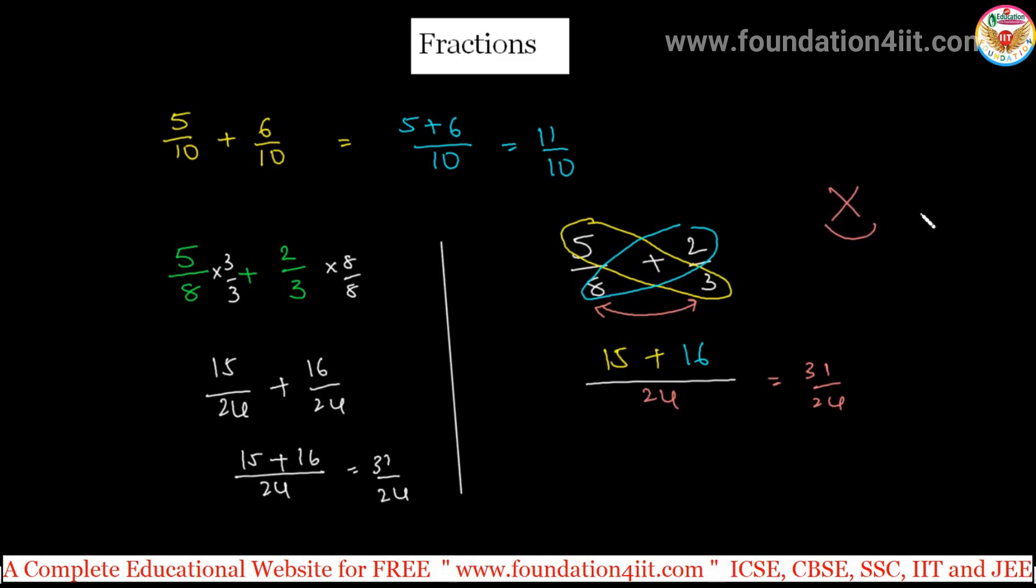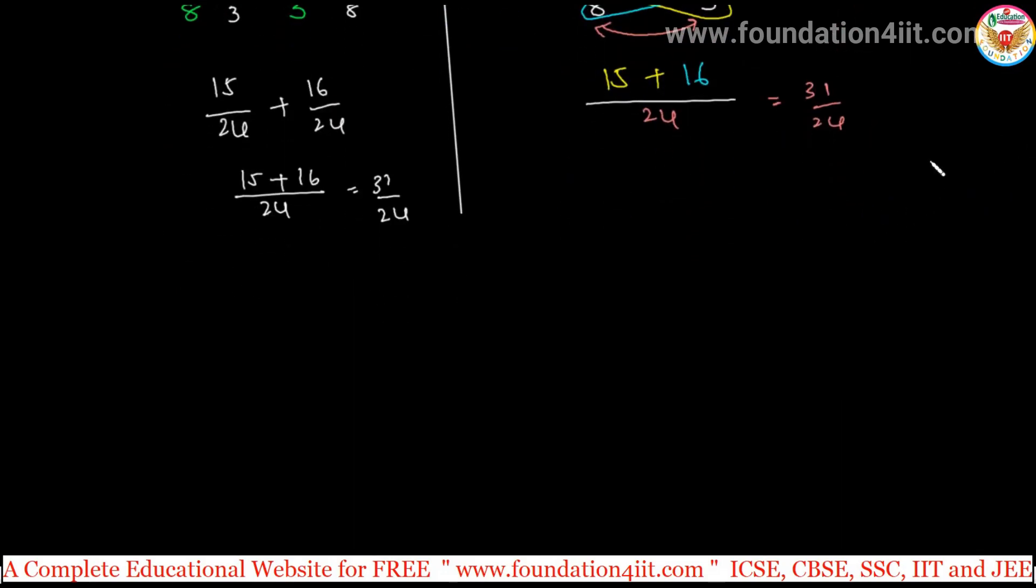Directly you can make it: 5 into 3, 2 into 8. Just this is the process you can remember, this cross. And next one, same method for subtraction also. For example, if it is more than two fractions, like 1 by 2 plus 1 by 4 plus 3 by 5. Normally we take the LCM of all the denominators and make them same, then you can add the numerators.